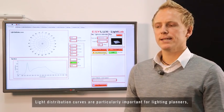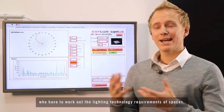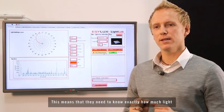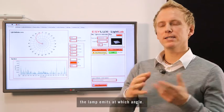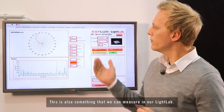Lichtverteilungskurven sind natürlich besonders wichtig für Lichtplaner. Lichtplaner müssen ja einen Raum ganz genau lichttechnisch berechnen. Das heißt, sie müssen ganz genau wissen, in welchem Winkel strahlt die Leuchte wie viel Licht eigentlich aus. Das können wir in unserem Lichtlabor eben auch messen.